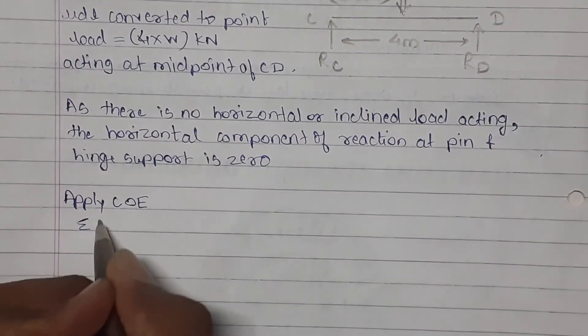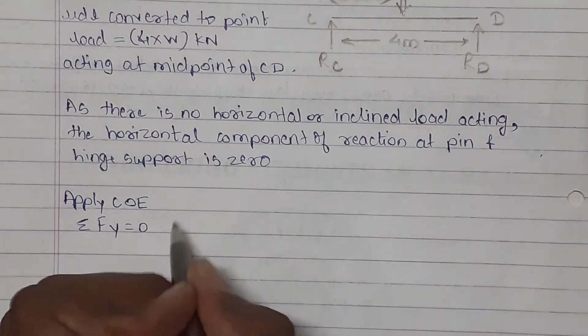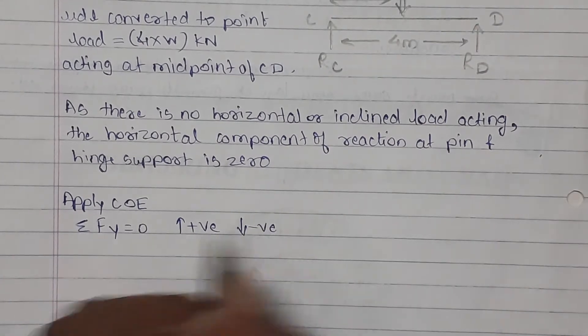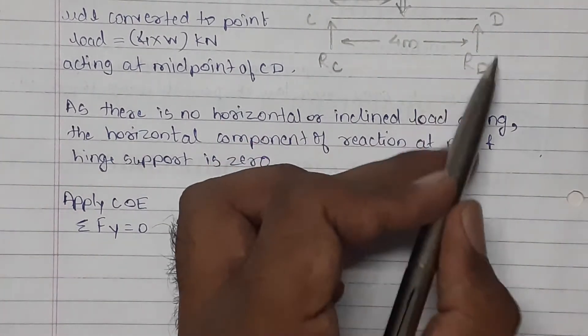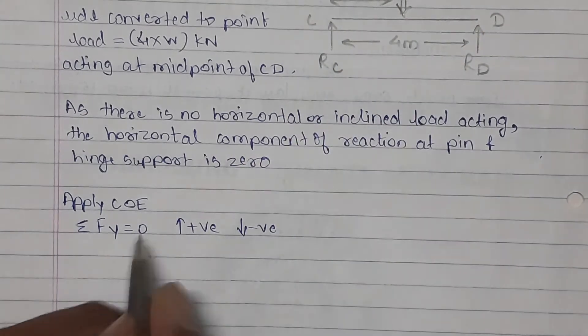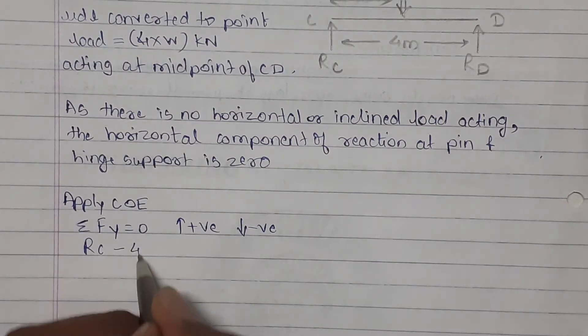First condition of equilibrium: summation Fy equal to zero. Forces upward are positive, forces downward are taken negative. Now here there are only vertical components. Horizontal component at C and D assume to be zero. So here plus RC